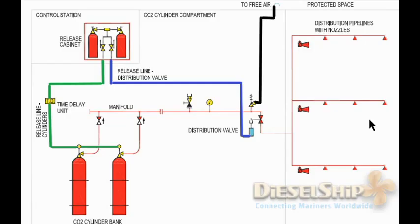There is a requirement that 85 percent of the CO2 has to be released within two minutes of operation. All pipings, nozzles, and diameters have been calculated so that this requirement is met. The details of the calculation — pipe diameter, length, and thickness — can be found in the CO2 manual.